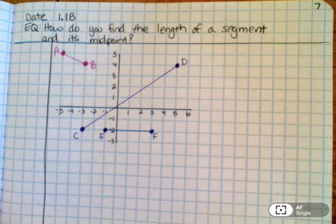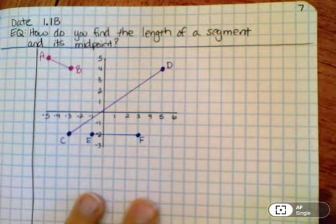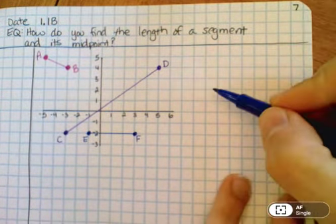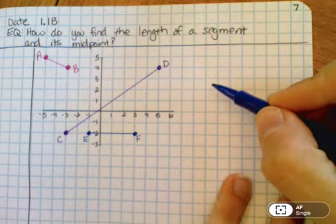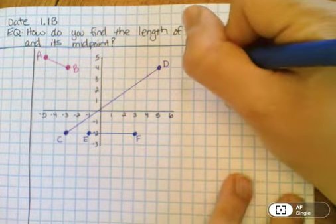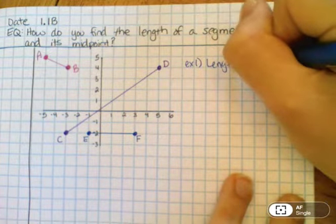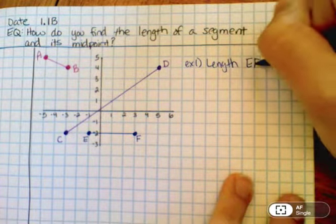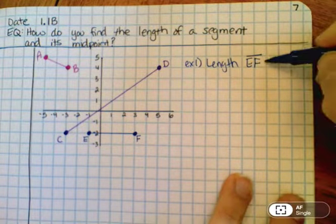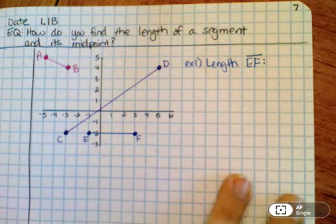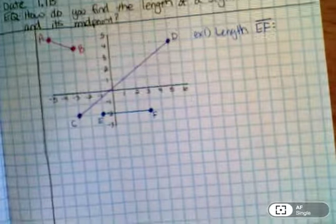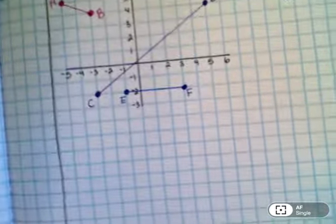Okay, welcome back. We're going to start with EF. So the first thing we're going to do is find the length of EF. So we're going to just write here, example one, find the length of EF.